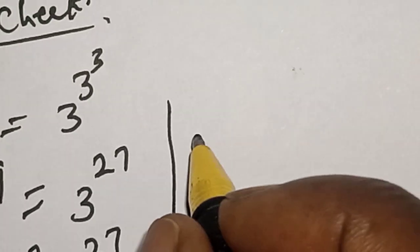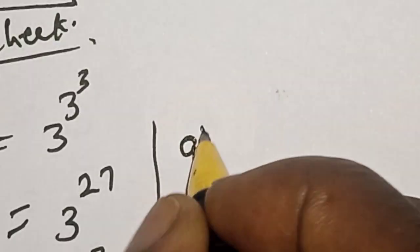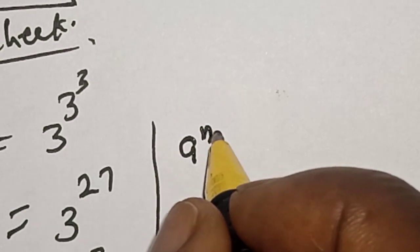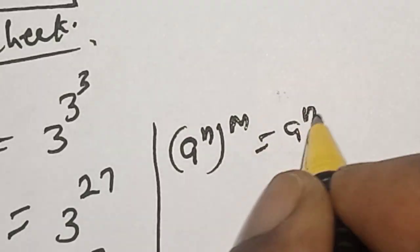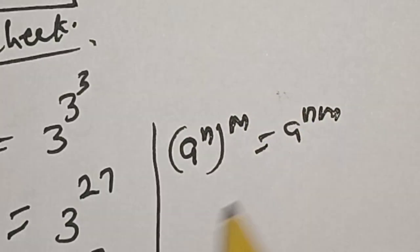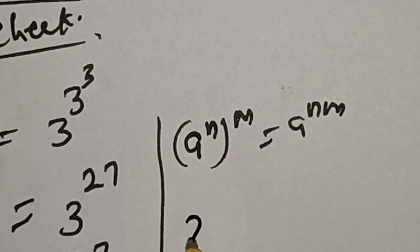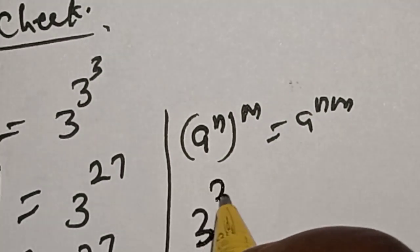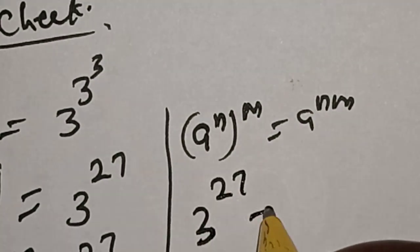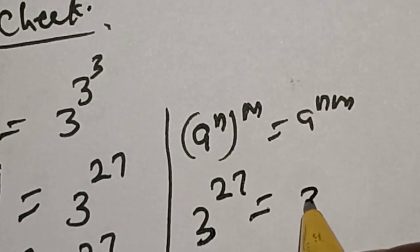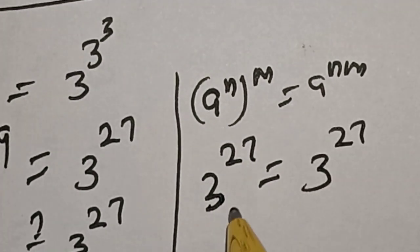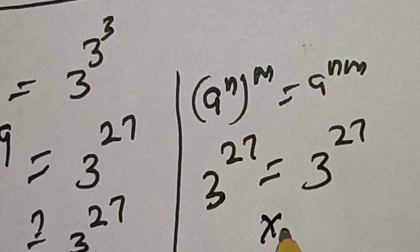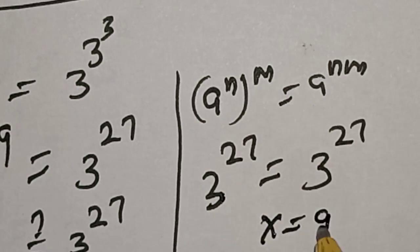Remember this rule: a raised to power n raised to power m equals a raised to power nm. Applying this, 3 raised to power 3 raised to power 9 equals 3 raised to power 27, which equals 3 raised to power 27. This satisfies the given equation, confirming that s equals 9.